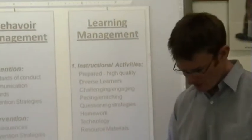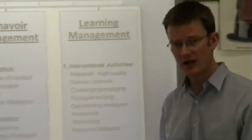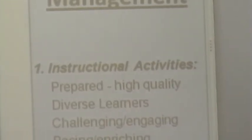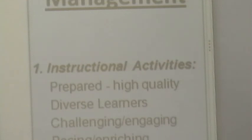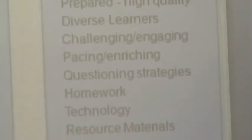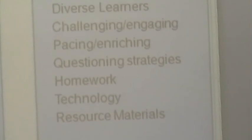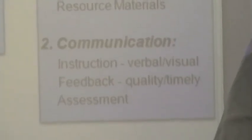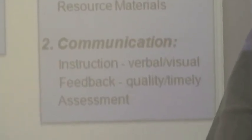The third part of my management plan is learning management, and I believe this should be the focus of the classroom management plan. The more planned a teacher is, the less discipline problems they are likely to encounter. There are seven sections: lessons must be engaging, address diverse learners, be challenging, well-paced and enriching. Questioning strategies, technology, homework as practice and preparation, and effective use of resource materials are all included. Communication must be both formal and informal with students. That's an overview of my classroom management plan — thank you for listening and goodbye.